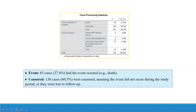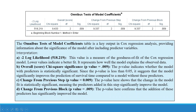Starting with the case processing summary: 63 events occurred — that is 27.6 percent — meaning the event (death) happened. Censored cases totalled 138, or 60.5 percent, meaning the event did not occur during the study period or they were lost to follow-up. Next is the omnibus test of model coefficients, which includes minus-2 log likelihood, the overall chi-square and its p-value, and the change from previous step and block with their respective chi-square values and p-values.